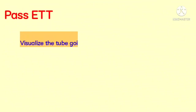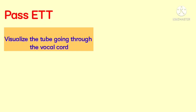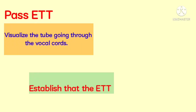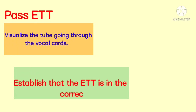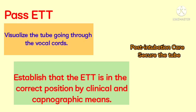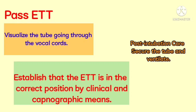Pass the ETT and visualize the tube going through the vocal cords. Establish that the ETT is in the correct position by clinical and capnographic means. Post-intubation care: secure the tube and ventilate. This is all about Rapid Sequence Intubation.